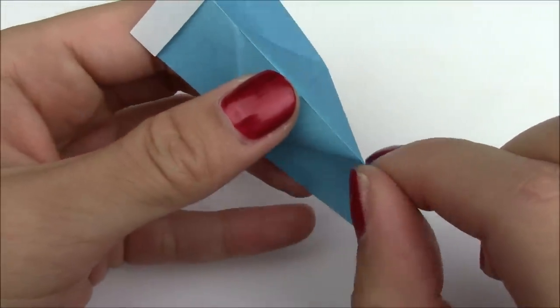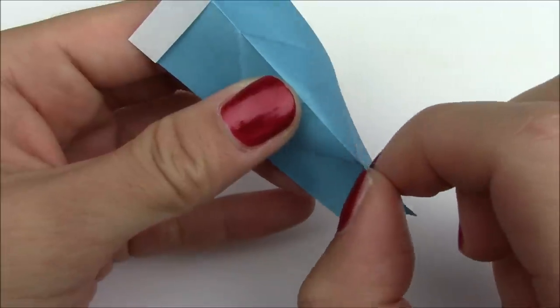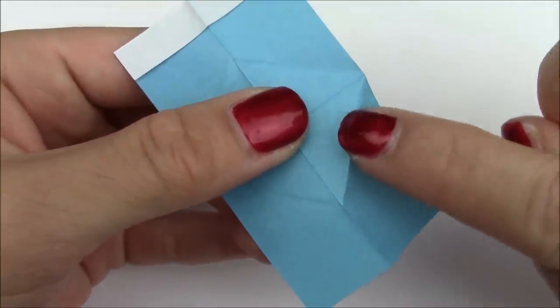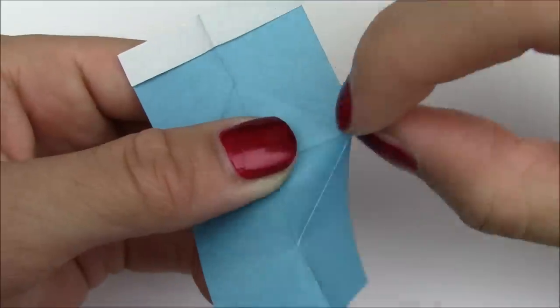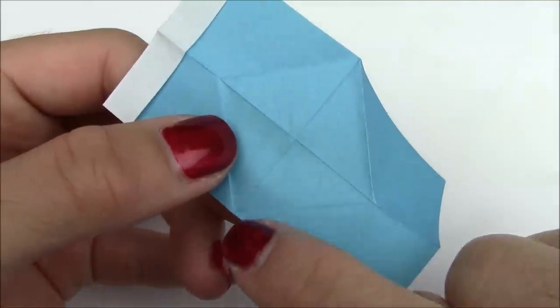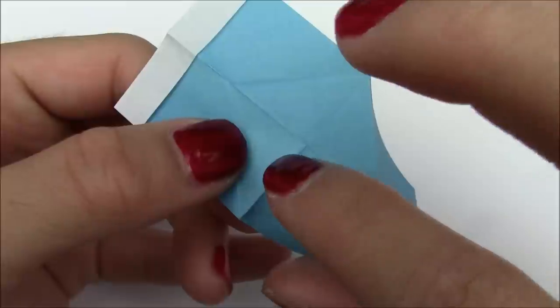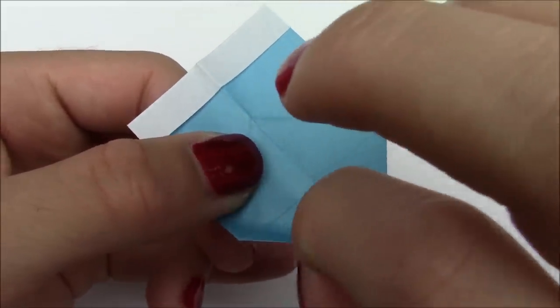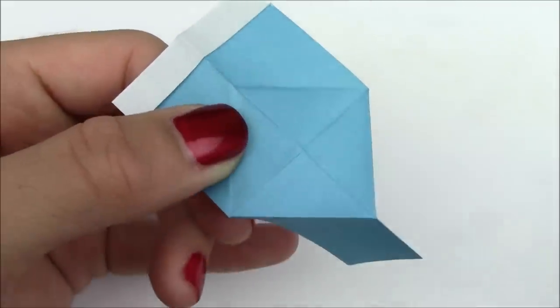So you're just going to fold it like this so that we're going to reinforce this crease here. And then you're going to reverse this crease right here. Crease that in like that. And do the same thing on this diagonal crease right here. So fold it and crease it in like that.